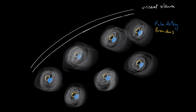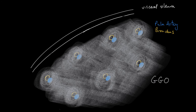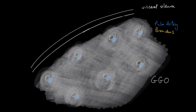As the central lobular nodules get bigger they start to become more ill-defined and start to coalesce with one another pretty much everywhere. The difference between ground glass change and consolidation is: where you are unable to see the blood vessel this becomes consolidation, otherwise you're dealing with ground glass opacification.